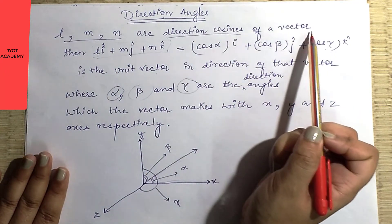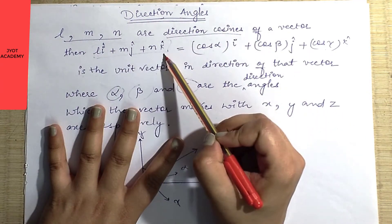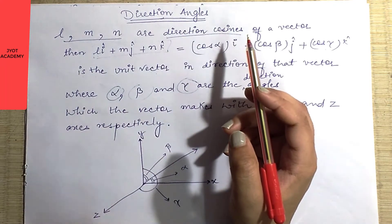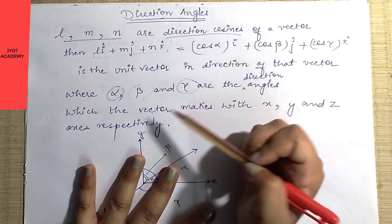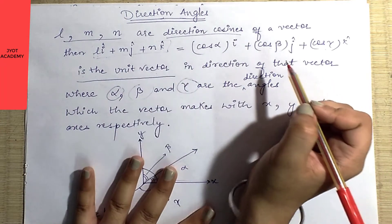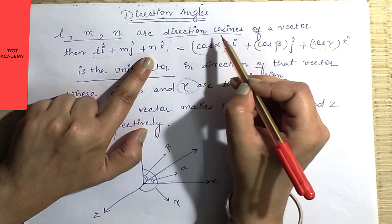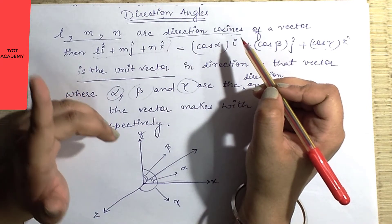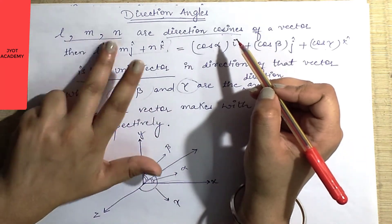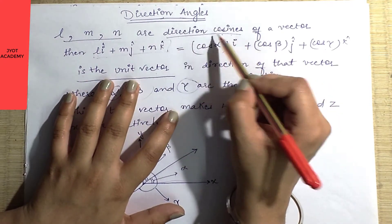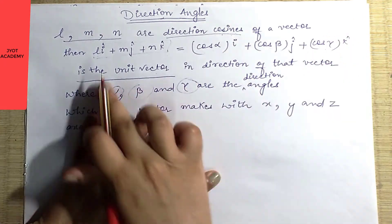The direction cosines l, m, n of a vector are known. Now, why have we placed a unit vector here? Because the unit vector of a given vector gives exactly l, m, n — the direction cosines. The unit vector in the direction of a given vector is exactly equal to l, m, n.